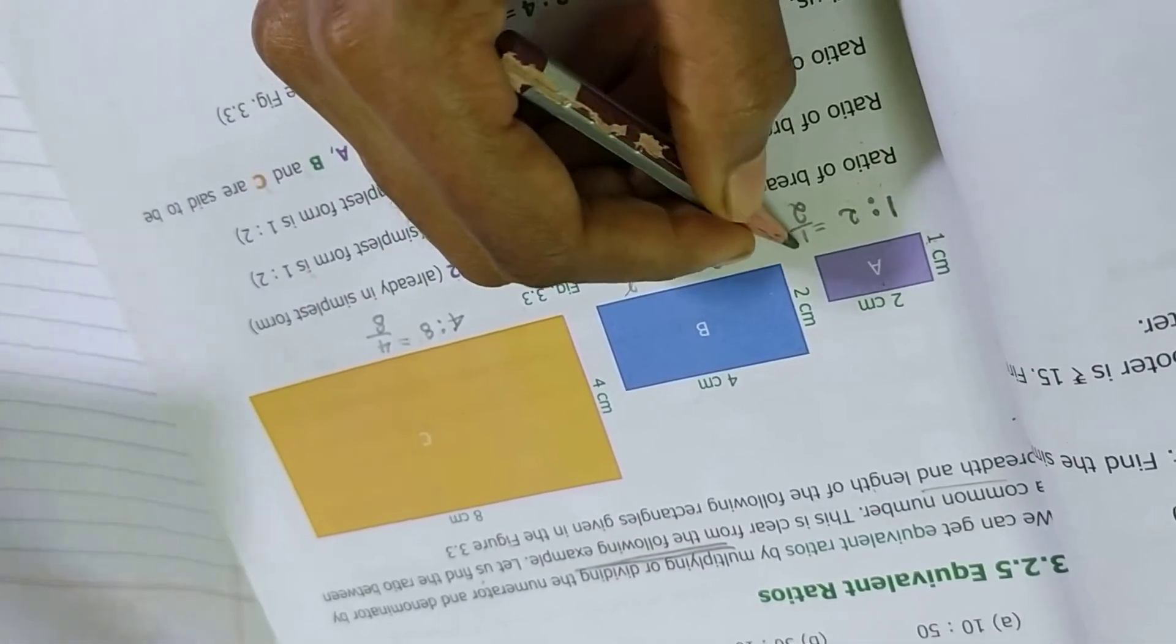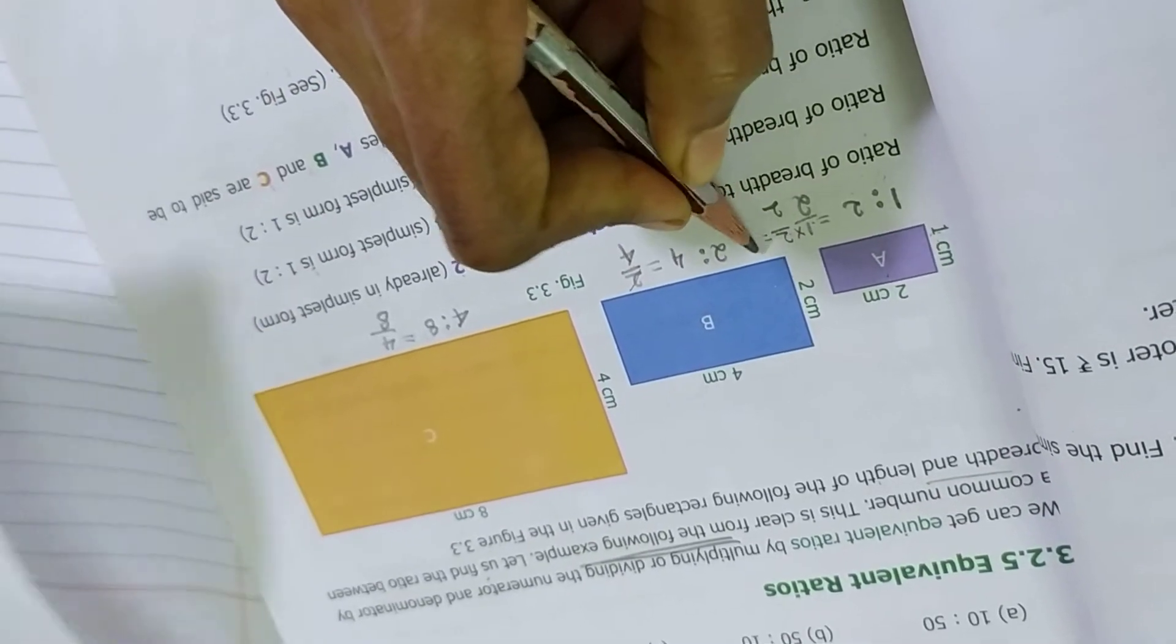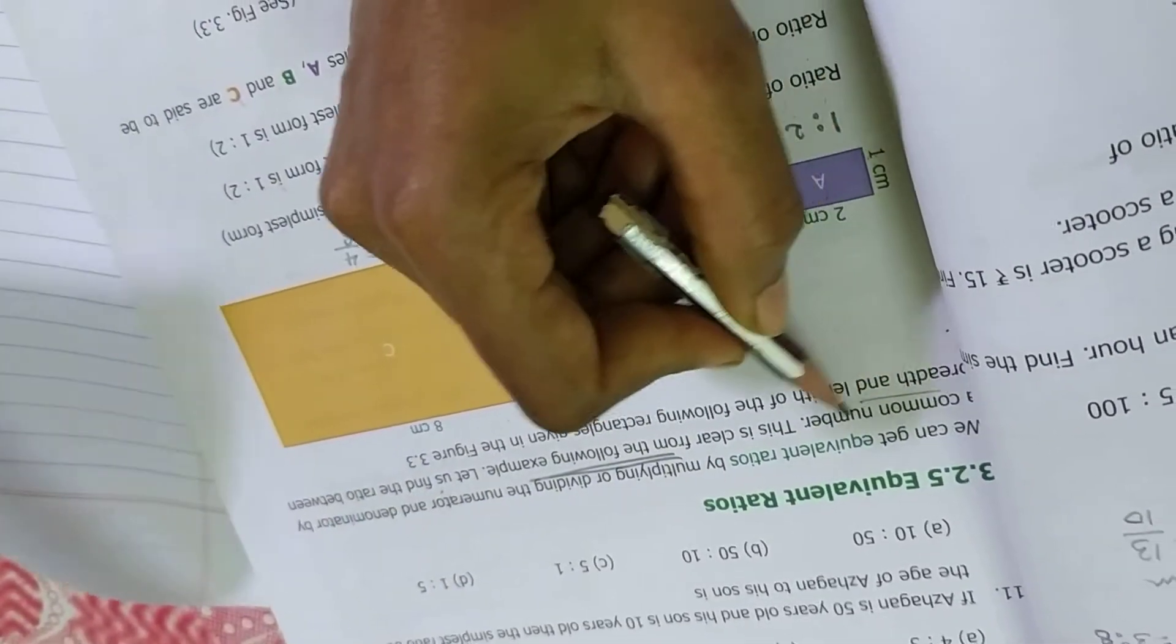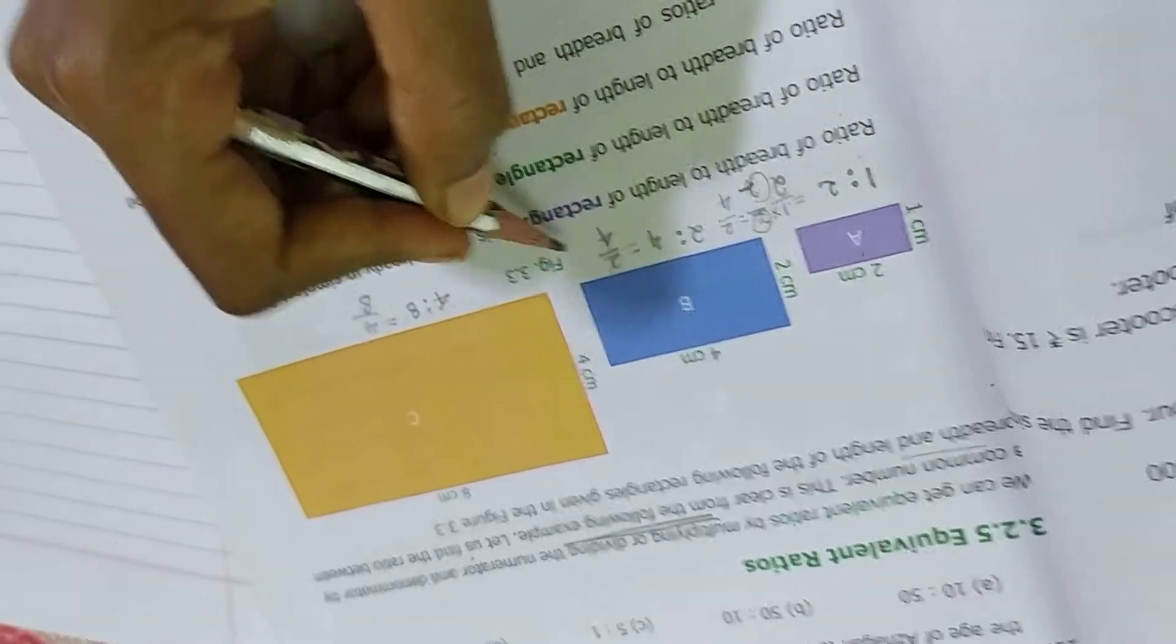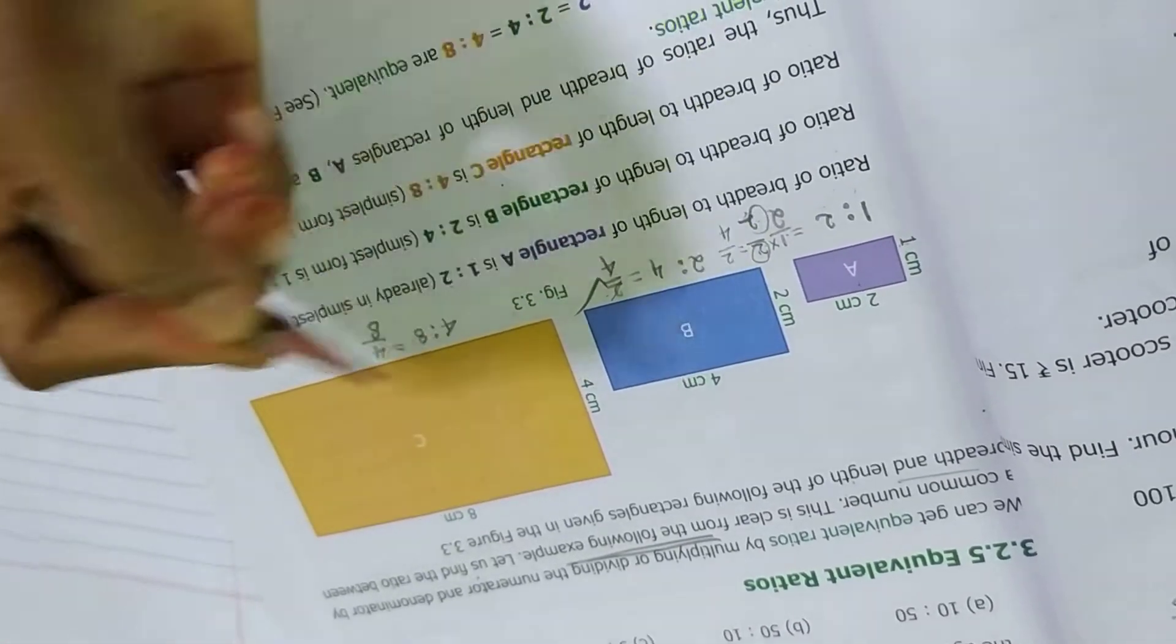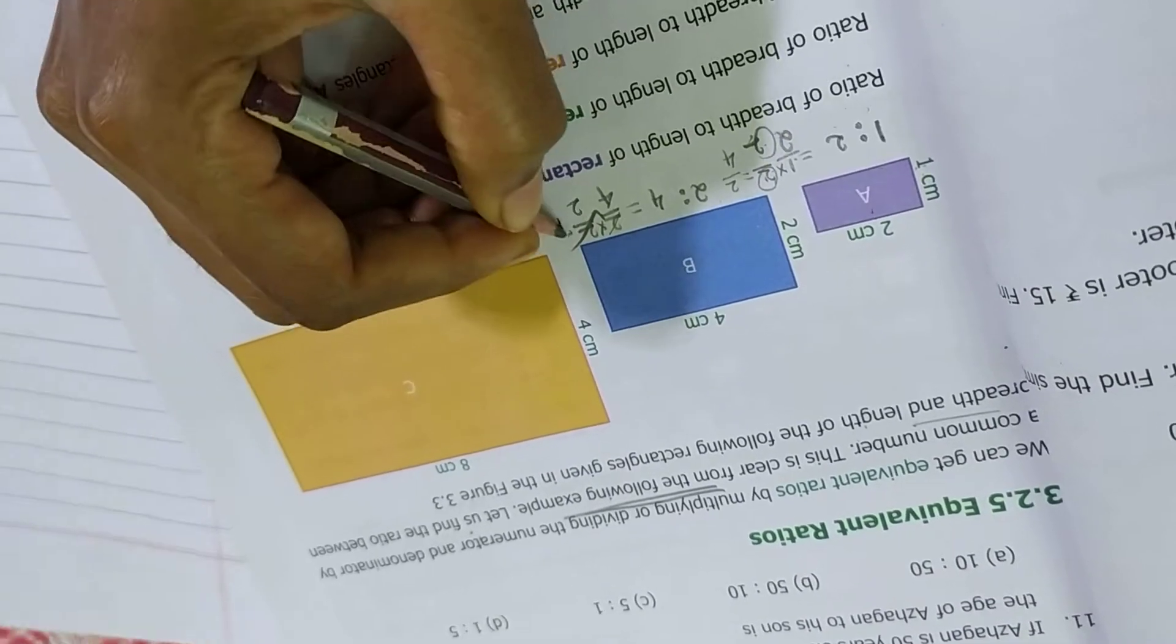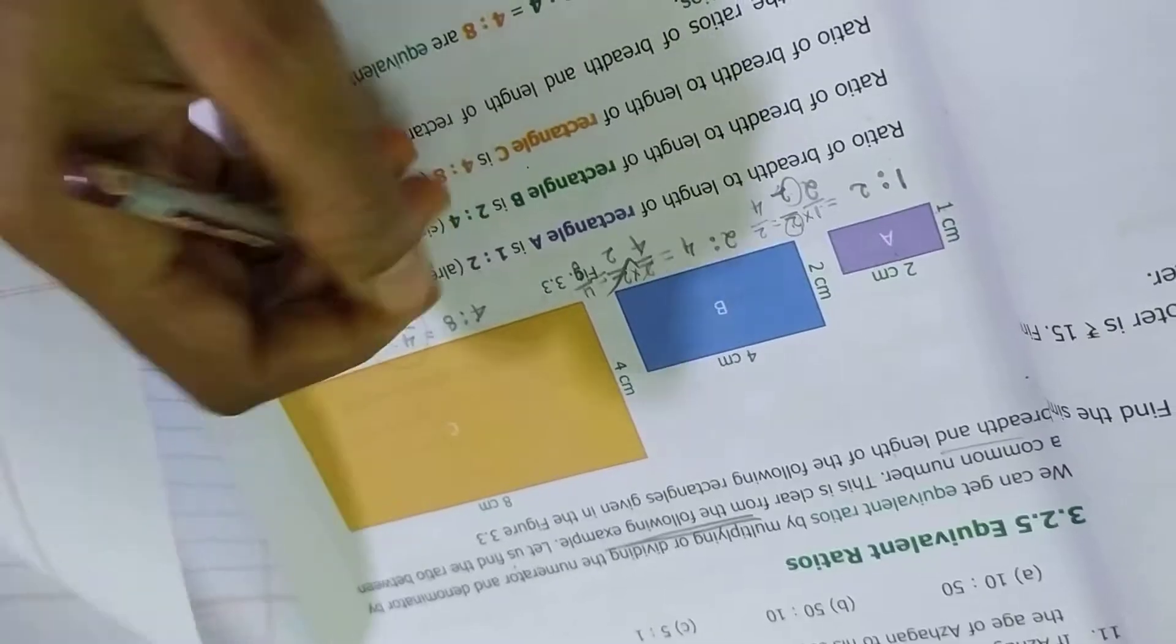So I can divide. 1 by 2, I can multiply by 2. 1 times 2 is 2, 2 times 2 is 4. So multiplying numerator and denominator by a common number. Common number 2 I am multiplying numerator and denominator, I am getting this 2 by 4. If I am multiplying 2 by 2, 4 by 8, I am getting 4 by 8. Are you clear?